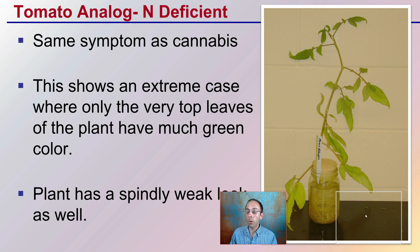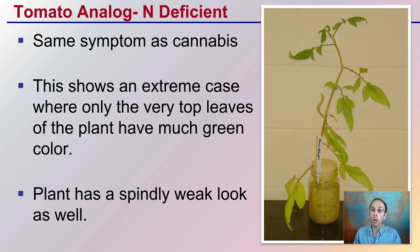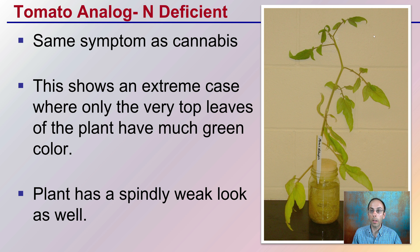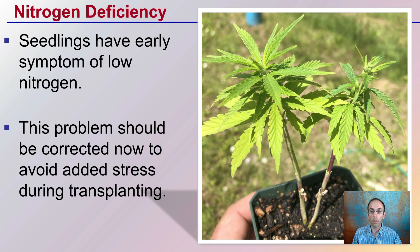If you're growing tomatoes, they kind of do the same thing — yellowing of those older leaves, same symptoms as cannabis. This was an extreme case where only the very top leaves of the plant have much green color to them at all, and the plant has a very spindly look to it in general as well.